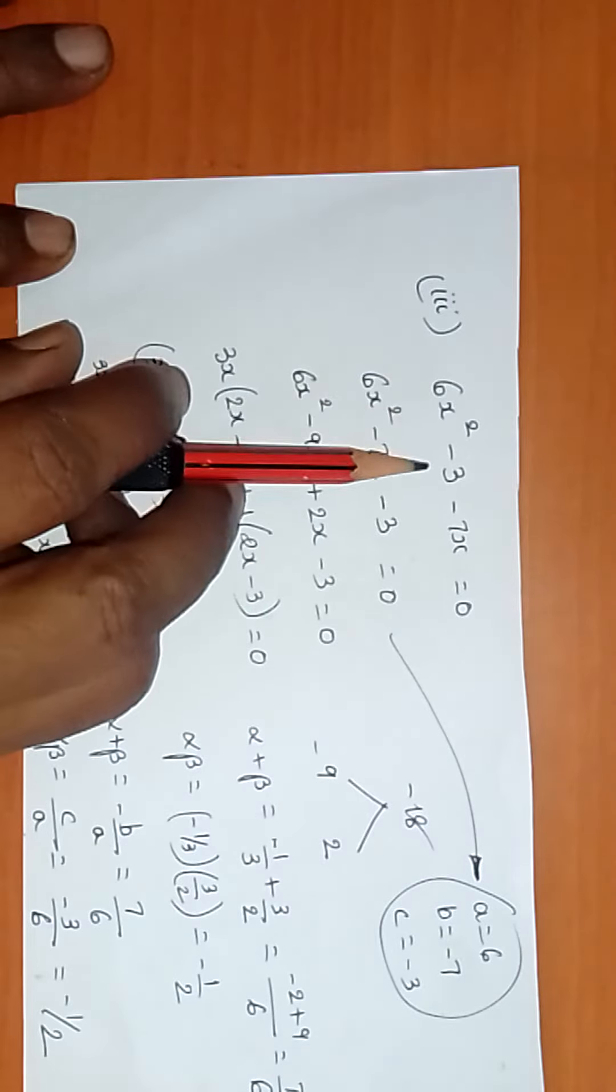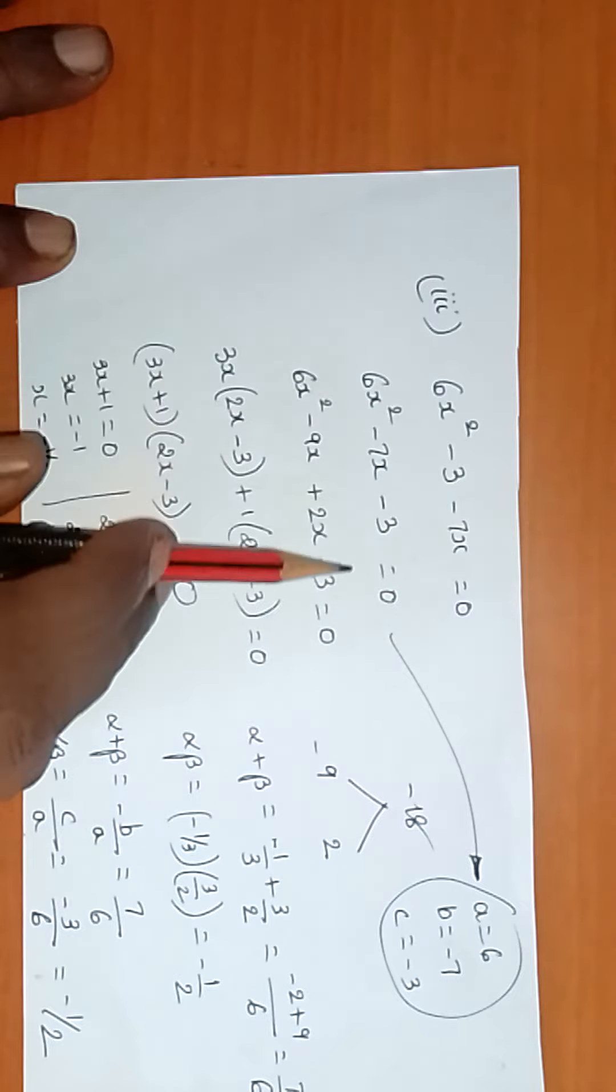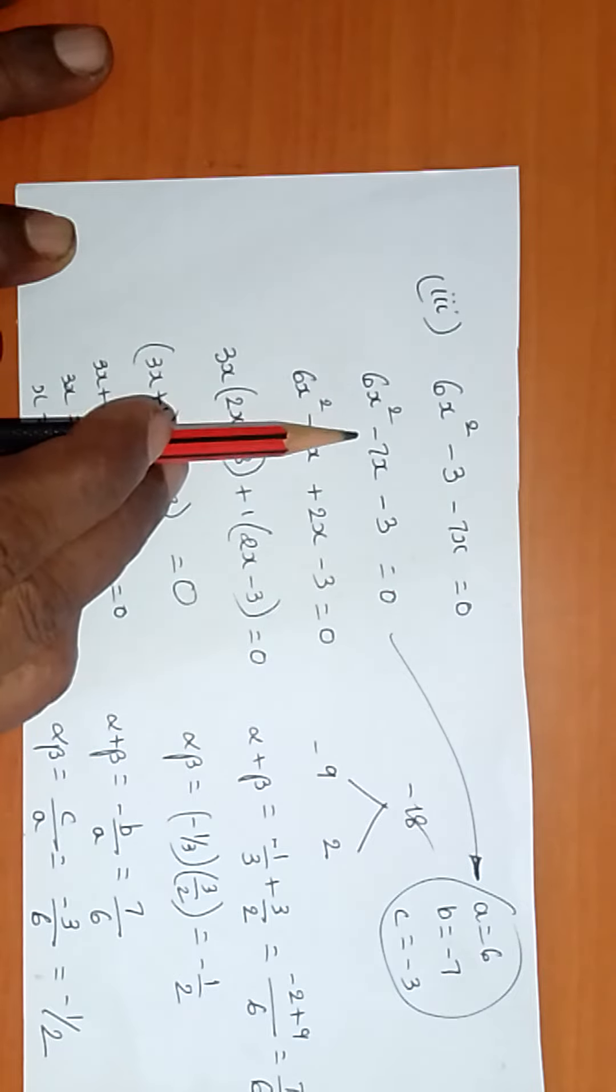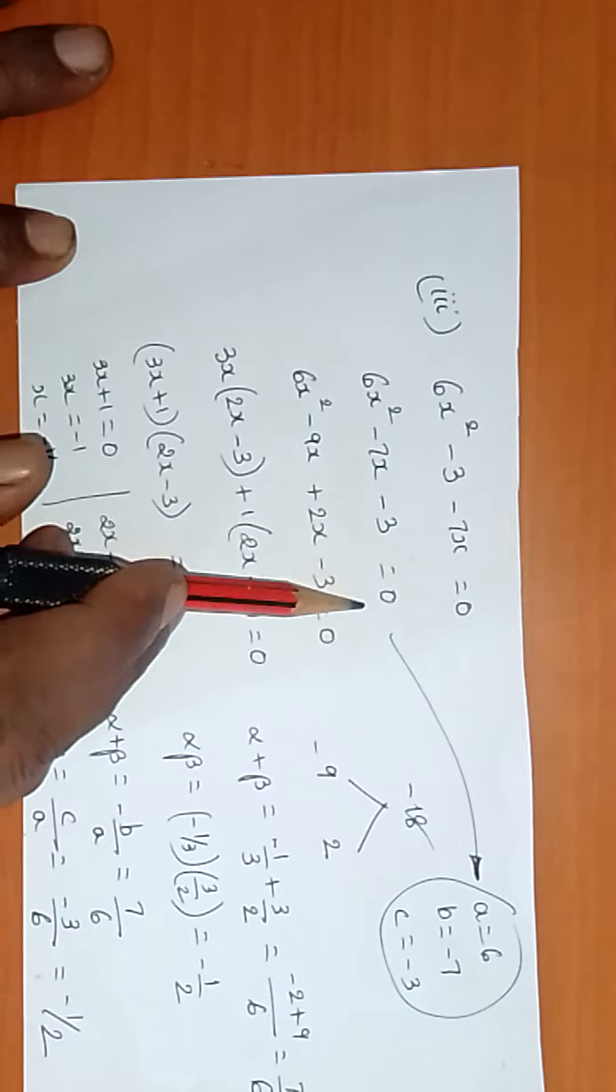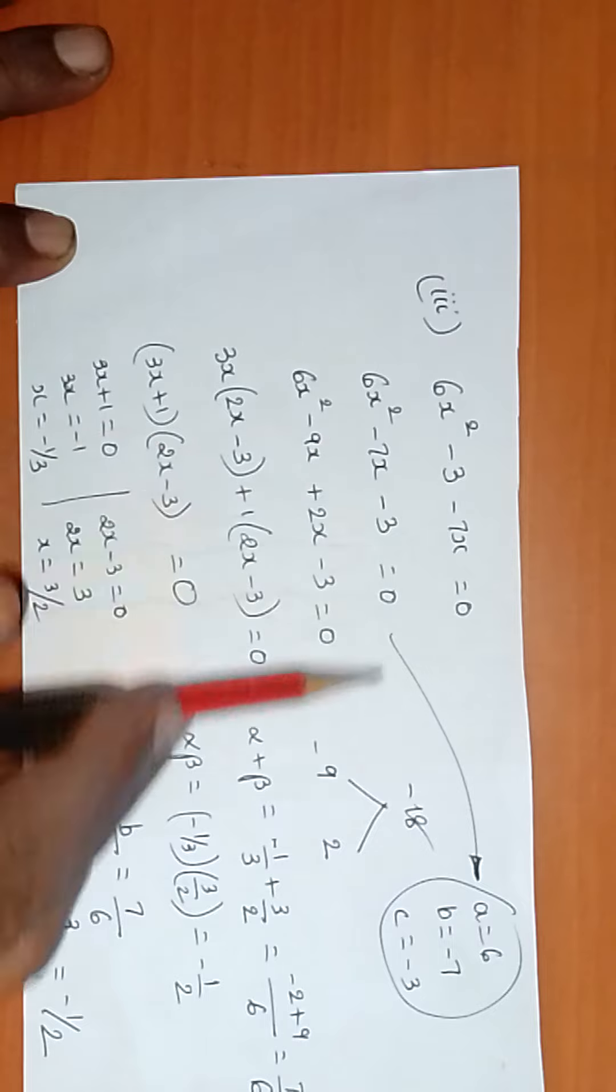6x² - 3 - 7x = 0. Now we will write in the correct format: 6x² - 7x - 3 = 0. Here a = 6, b = -7, and c = -3.